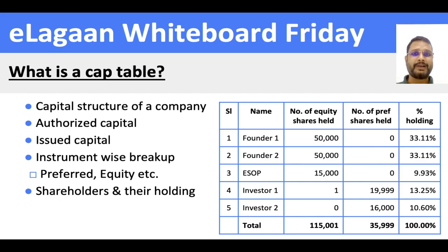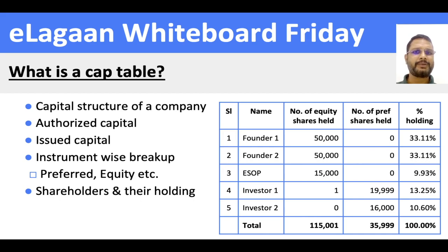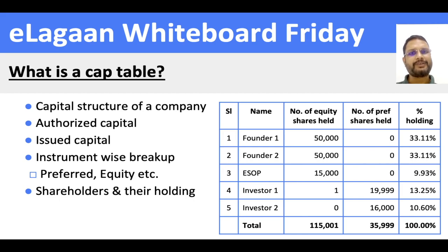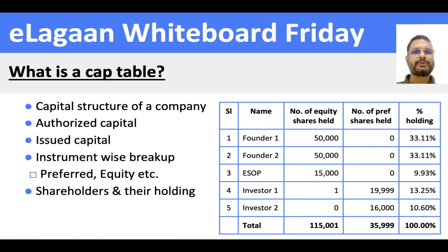Then you show the impact on the percentage ownership of the company. Preferred shares typically are not associated with voting rights, but the way investors account for this is: whenever preferred shares get converted to equity, you calculate how much equity they would convert to, and that's how voting rights are determined. The same applies to CCDs — whenever the debentures are converted to equity, you look at what the percentage holding would be.